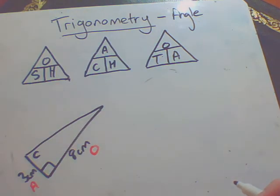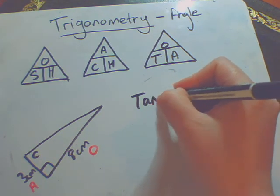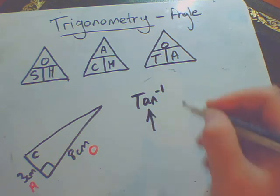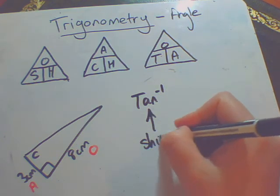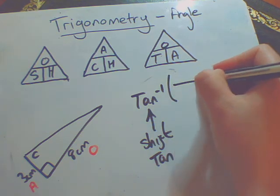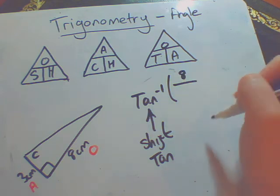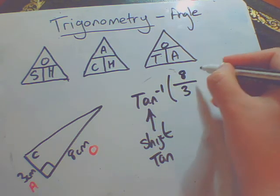Have a go at calculating your angle. So we should have tan minus 1. Remember to get to that, it would be shift and tan. And then you need to put in your fraction. So O, which is 8, divided by 3.